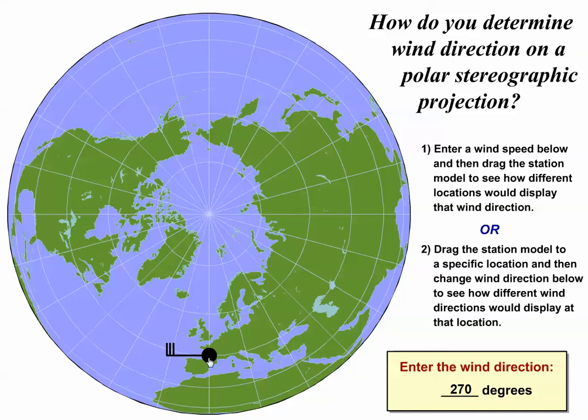Right now I have my station model located over Europe and it's set up for a 270 degree wind. That's a westerly wind. See how the wind flag parallels the local latitude circle at the station model?